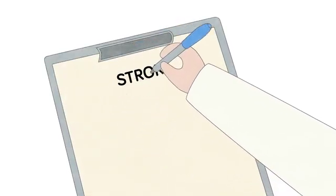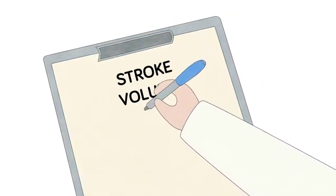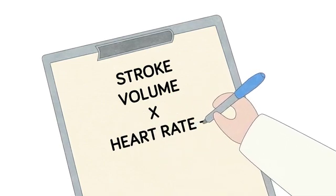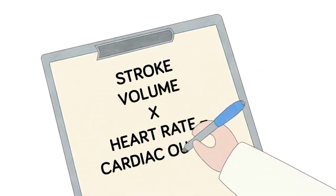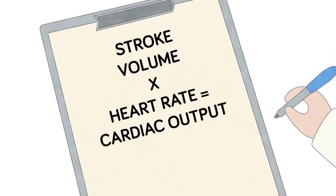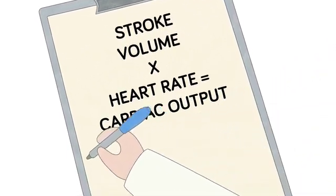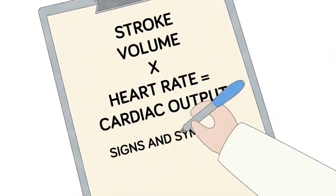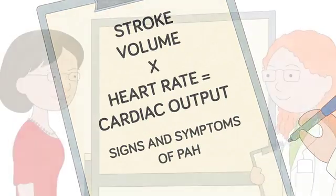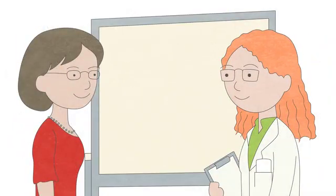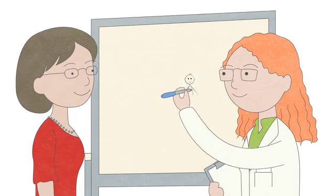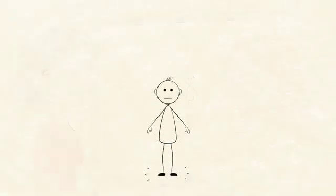The amount of blood the left ventricle pumps out in one contraction combined with the heart rate is the definition of cardiac output. Patients with PAH often present with a reduced cardiac output, which can be directly responsible for the signs and symptoms of this serious condition. Now that we understand cardiac output, let's explore the signs and symptoms in greater detail.